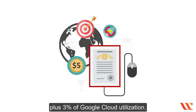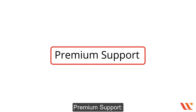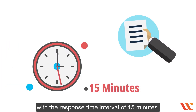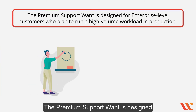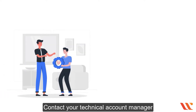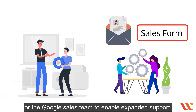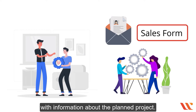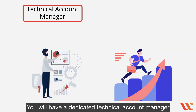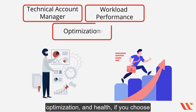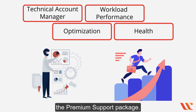Premium support is Google Cloud Platform's highest level of support, with a response time interval of 15 minutes. It is designed for enterprise-level customers who plan to run a high-volume workload in production. Contact your technical account manager or the Google sales team to enable premium support — you'll need to fill out a sales form with information about the planned project. You will have a dedicated technical account manager working directly with you as a technical advisor on workload performance optimization and health.